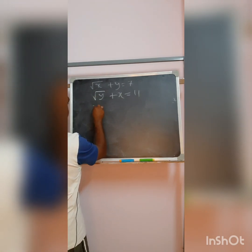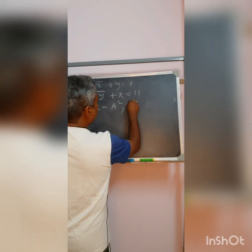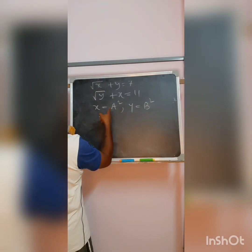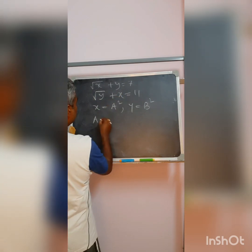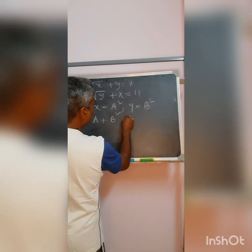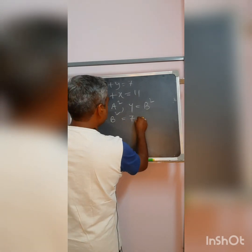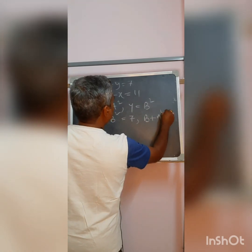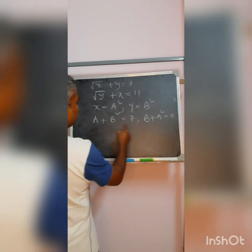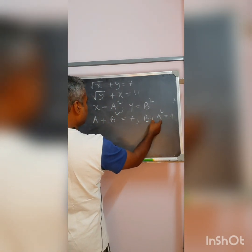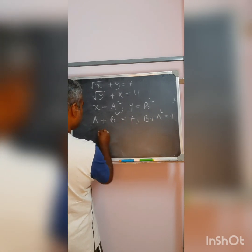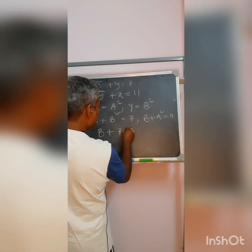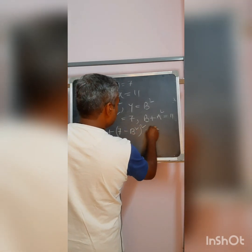To solve it, I take x equal to a squared and y equal to b squared. So replacing in the equations: from the first equation, a plus b squared equals 7, and the next equation becomes b plus a squared equals 11.